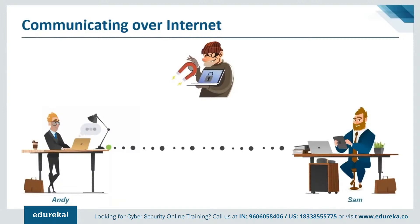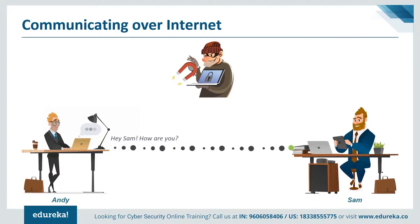I'm going to take the help of a scenario to explain what cryptography is. Let's say we have a person called Andy. Suppose Andy sends a message to his friend Sam who is on the other side of the world. Obviously he wants this message to be private and nobody else should have access to it. He uses a public forum, for example the internet, for sending this message. The goal is to actually secure this communication, and we have to be secure against someone.